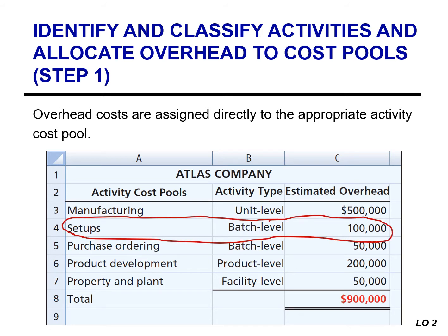After we identified the activity cost pools, we must assign overhead costs to the appropriate cost pool. Atlas will assign to the Setups Activity Cost Pool all overhead costs directly associated with machine setups — the cost of resources consumed when setting up machines, such as salaries of employees who perform the setups and any supplies or indirect materials needed during the setup. In this example, $100,000 is allocated to the Setups Activity Cost Pool. Atlas assigns the total manufacturing overhead of $900,000 to the five cost pools. It is important to note that total manufacturing overhead is the same whether you're using a traditional or activity-based costing system.